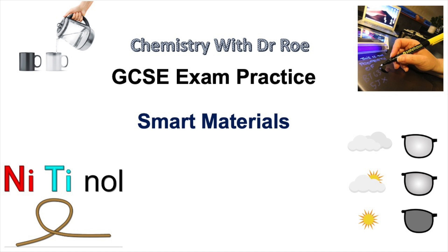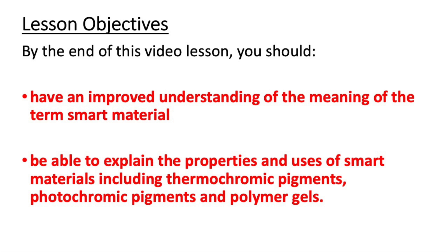Welcome to our latest video in our GCSE revision series. This video is on the topic of smart materials. By the end of this video lesson, you should have an improved understanding of the meaning of the term smart material, and you should also be able to explain the properties and uses of smart materials including thermochromic pigments, photochromic pigments, and polymer gels.